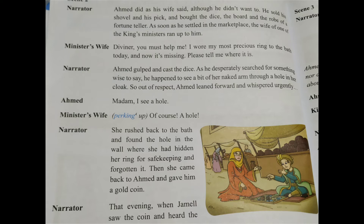The narrator: That evening when Jamil saw the coin and heard the story, she said, 'You see, there is nothing to it. Being a diviner is a piece of cake.' No qualification required, no special thing required — just talent is important. It is so simple, like eating a piece of cake; you just have to follow simple tricks.